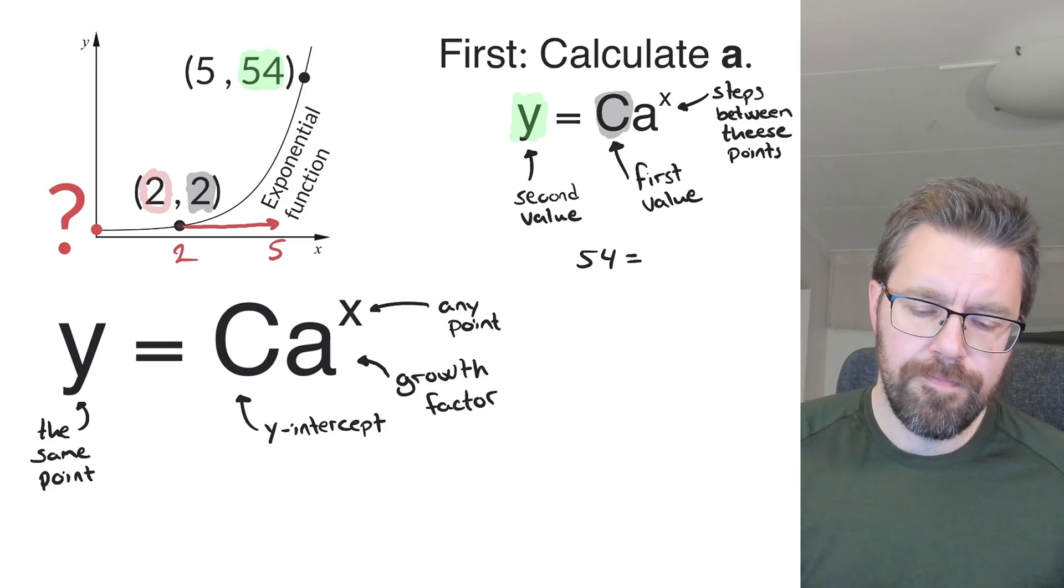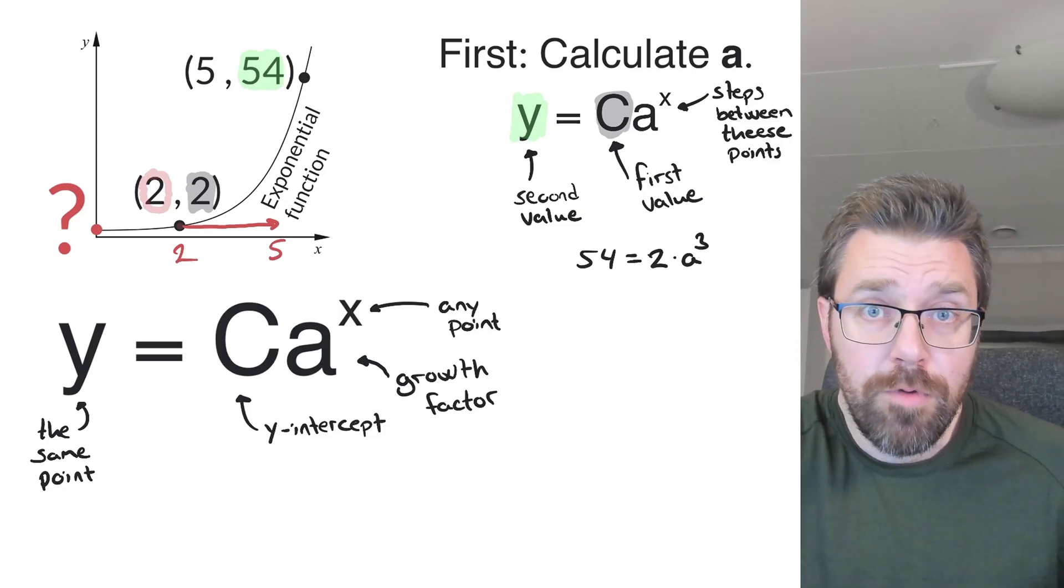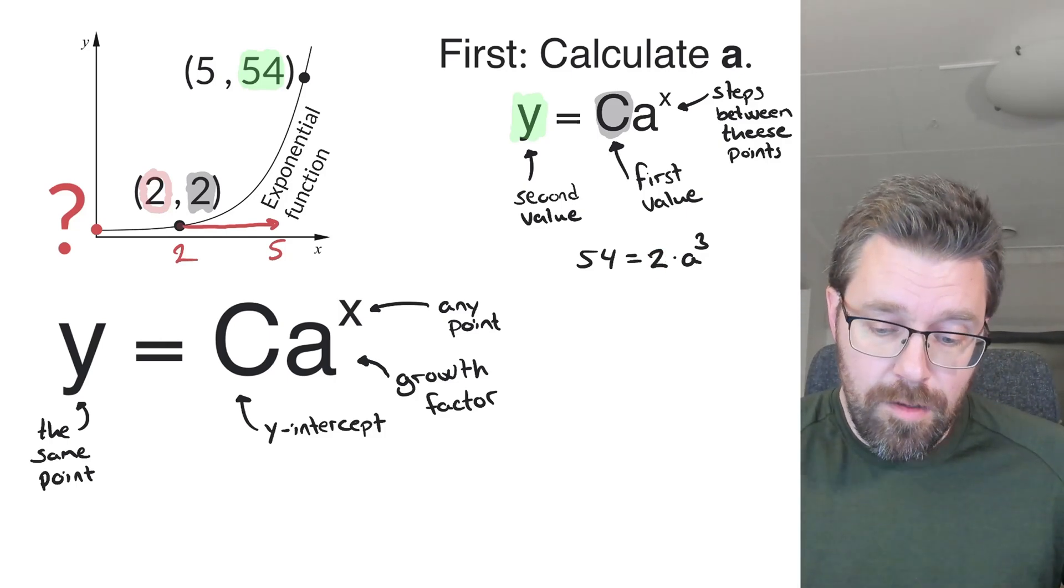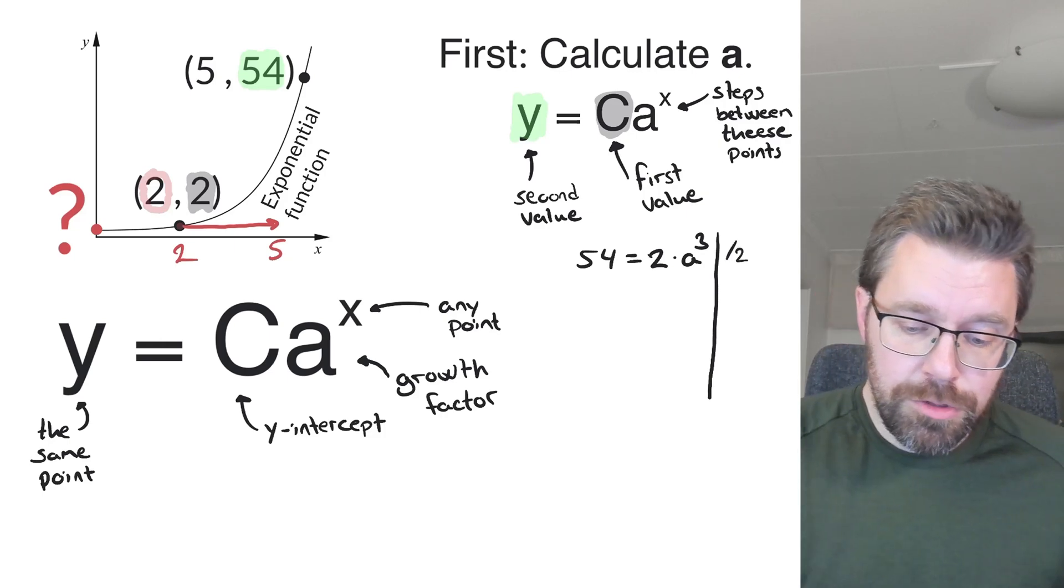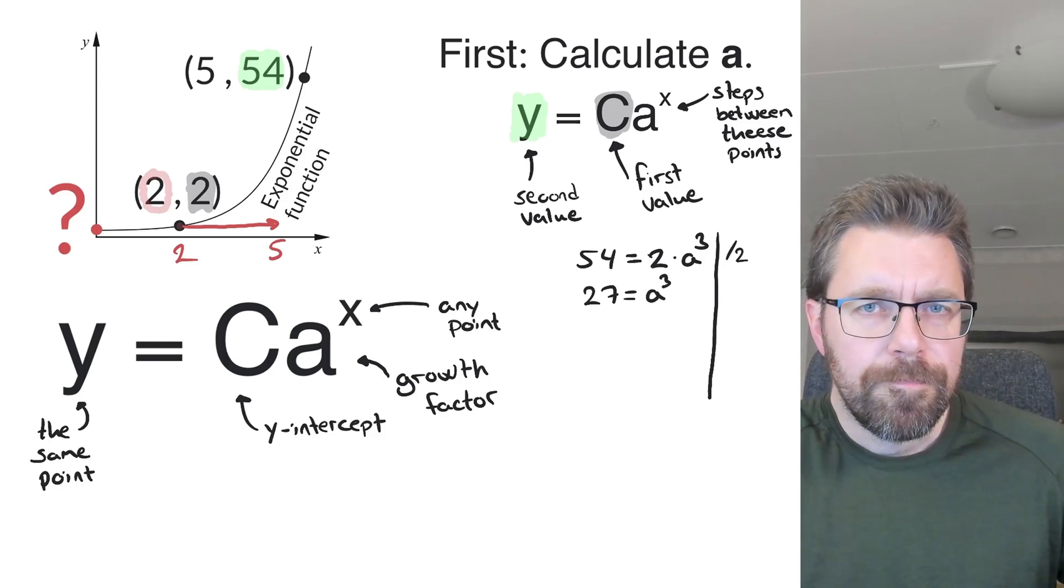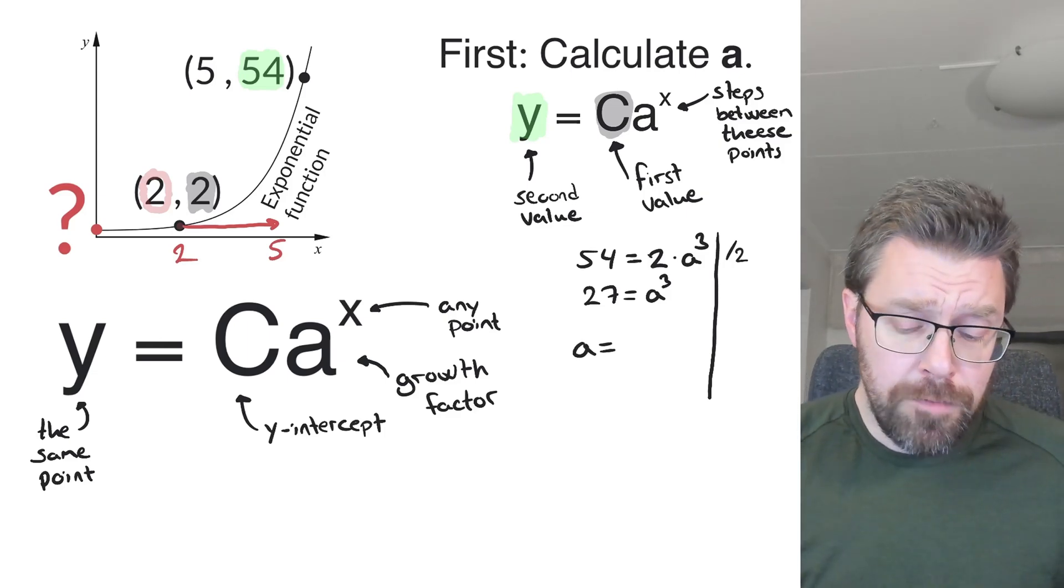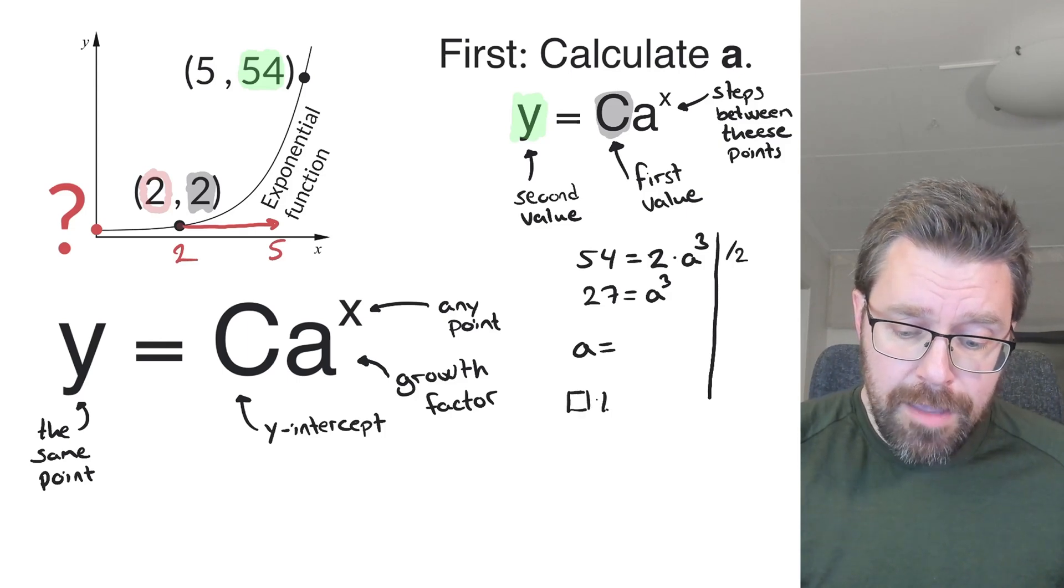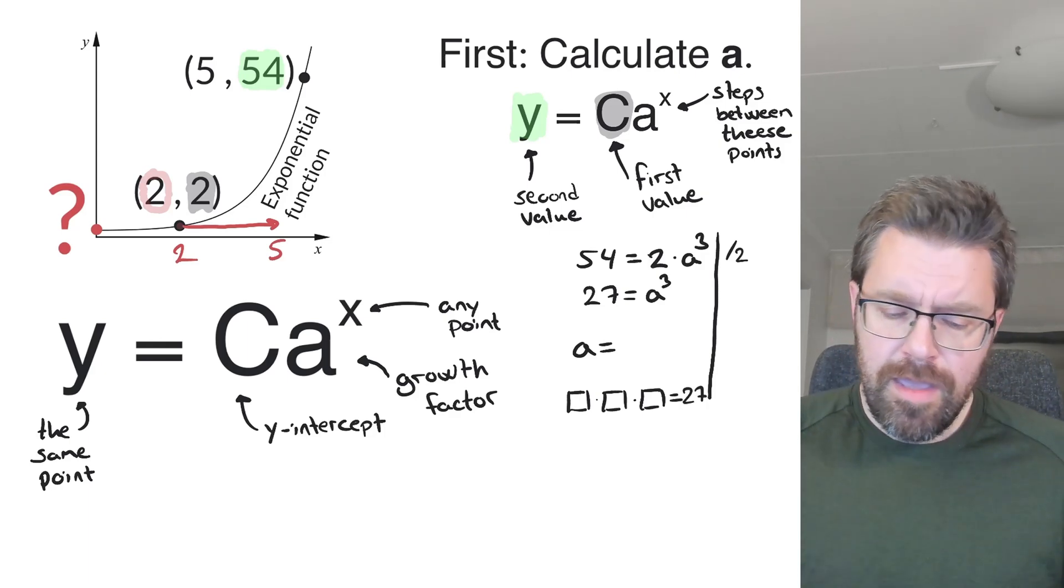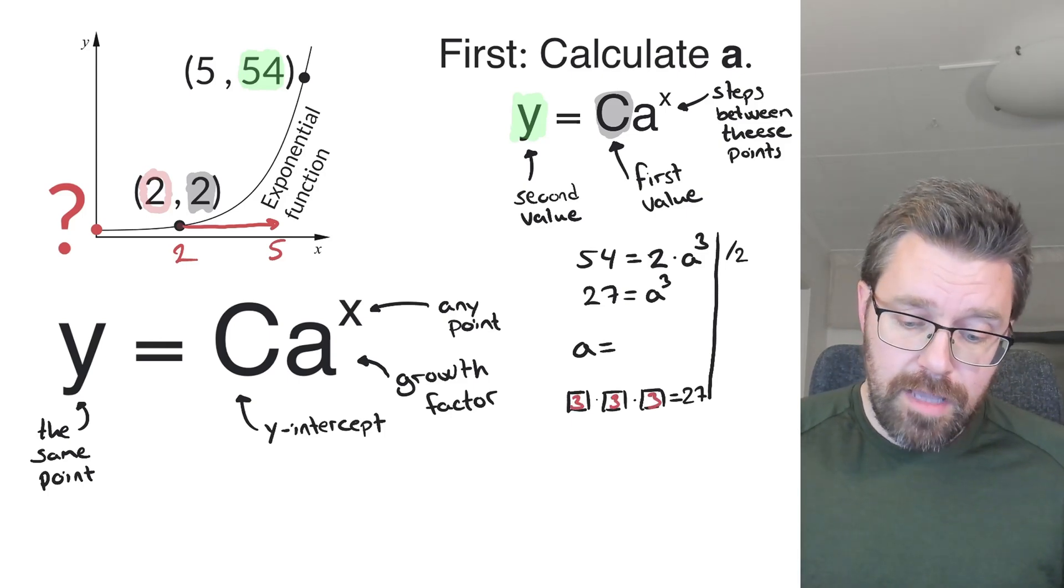So in the first step we set up the following equation: 54 equals 2 times a raised by 3. And how do we solve it? First we want to divide by 2. It's always the first step. So divide by 2 and we get 27, and on the right side a cubed. And now we are looking for some value that if we take a and times itself and times itself again we want to have 27. And then we found out that 3 times 3 times 3 equals 27, and then we know that a equals 3.